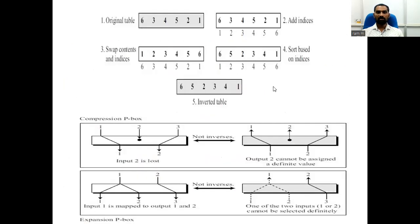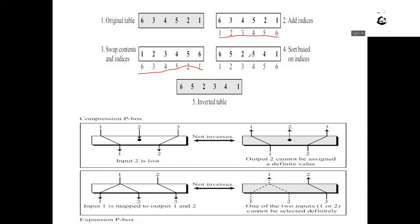This example shows invertibility. If we have a 6-bit input and a permutation table like 6, 3, 4, 5, 2, 1, we assign indexes to it. To invert, we swap the positions and values, then rearrange based on the index. For instance, at position one we have 6, at position two we have 3, at position three we have 4, and so on — recovering the original permutation.